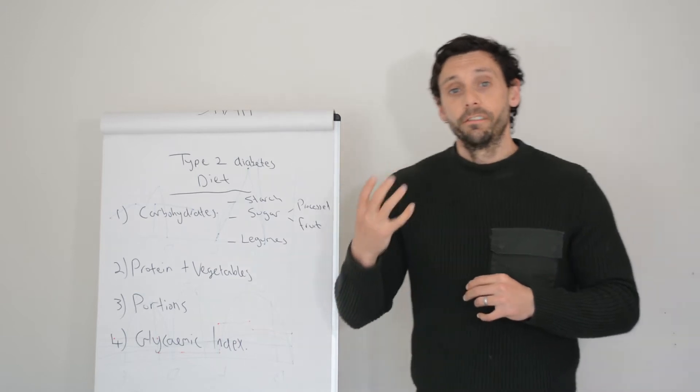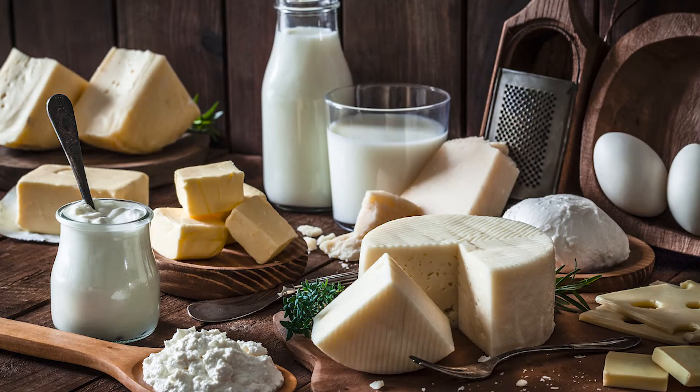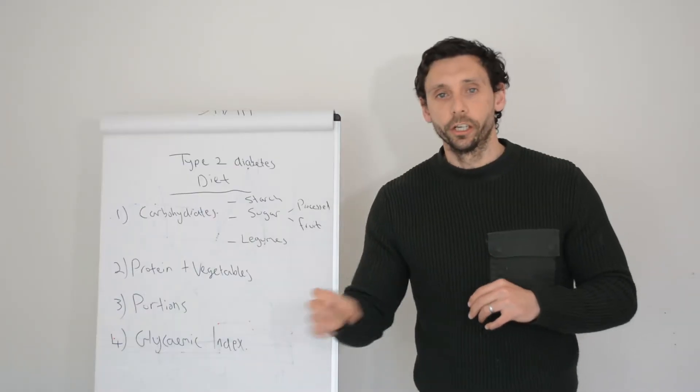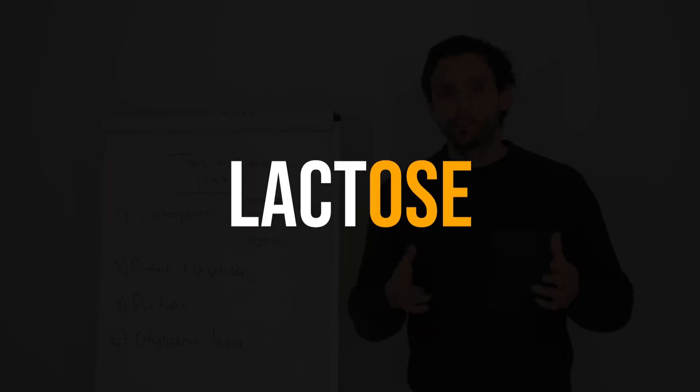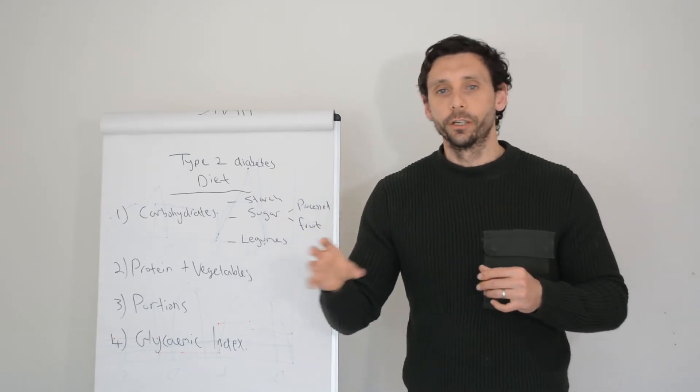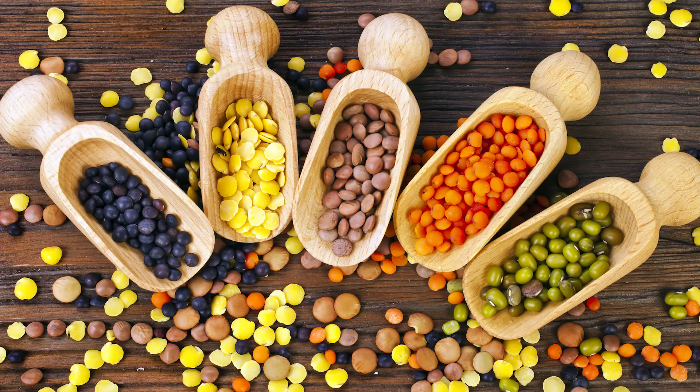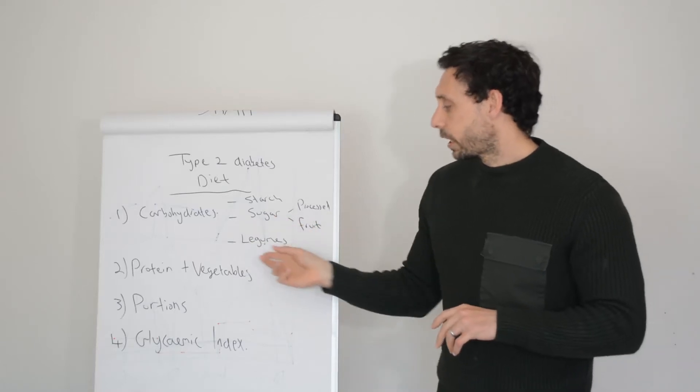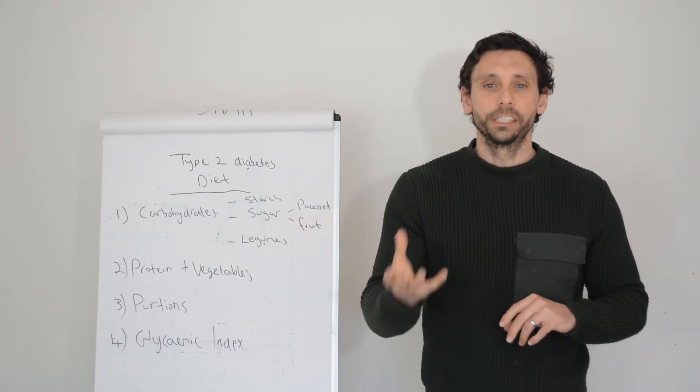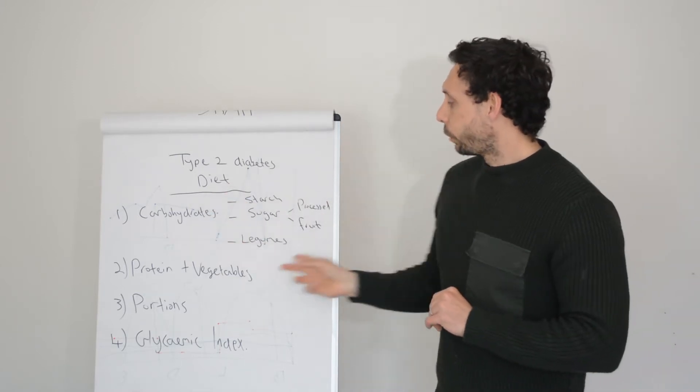We also have natural sugars which you find in fruit and in a small amount in your dairy products, milk and yogurt. That sugar is called lactose. Anything that ends in -ose means sugar: lactose, glucose, fructose all mean sugar. Also to a smaller extent in legumes, beans, pulses, lentils, chickpeas. They have some carbohydrates but their primary nutrient is protein.